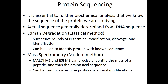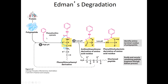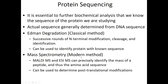We can also determine the exact sequence of a protein. The classic method is Edman degradation, where successive rounds of chemistry modify the amino terminus, cleave it off, and then identify one amino acid at a time. You modify the amino terminus, alter the pH to cleave the amino-terminal residue, and identify it — repeating this process to read the sequence one amino acid at a time.